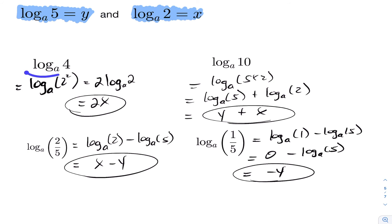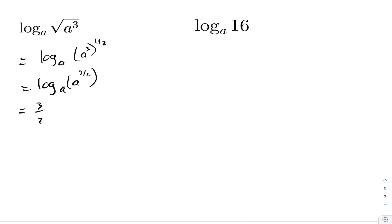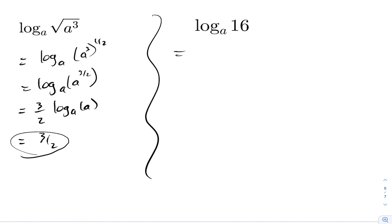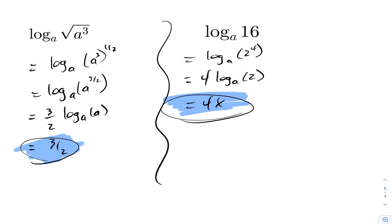For log base a of the cube root of a squared, we rewrite this as a cubed to the power of one-half, which is a to the three-halves. Using the power rule, we drop down the three-halves to get three-halves times log base a of a. Since log base a of a equals one, the answer is three-halves. For log base a of sixteen, we rewrite sixteen as two to the fourth, drop down the four using the power rule, getting four times log base a of two, which equals four x.